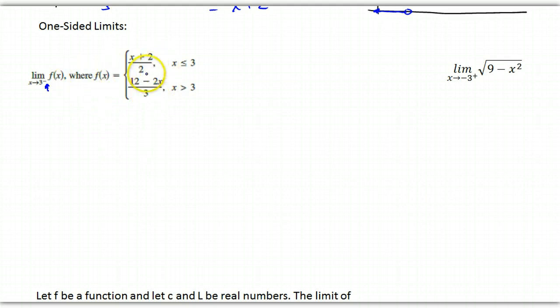And so, we go to this piecewise function. And since we are only interested in what's happening to the left of 3, we are going to use the piece of the function that works with x values to the left of 3. Namely, the x plus 2 over 2. So, the limit of f of x as x approaches 3 from the left will be the limit as x approaches 3 from the left of x plus 2 over 2, which ends up being 5 halves.